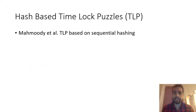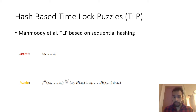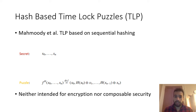Next, we have hash-based time-lock encryption puzzles. This one is proposed by Mahmoudi et al. and is based on sequential hashing. We have a secret X₀ through Xₙ, and the puzzle itself is a tuple where the first argument is X₀, the second is the hash evaluation over X₀ XOR'd with the next part of the secret X₁, and this goes on until Xₙ. It is worth mentioning that this time-lock puzzle scheme was not intended for encryption, because semantic security does not hold — the secret is revealed in a progressive way. Neither was composable security provided.